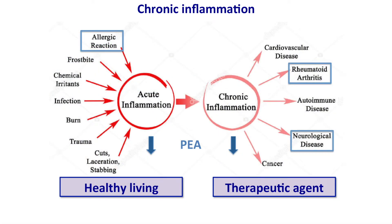Acute inflammation is the type of inflammation we have whenever our body is subjected to some kind of harmful stimulus—for example, a frostbite or a cut. A little infection causes inflammation. It's a very protective response; we need inflammation. Acute inflammation is rarely treated pharmacologically. If you have an allergic reaction, maybe you take an antihistamine, but typically you don't treat the inflammation itself—for an infection, you treat the infection, you take an antibiotic.